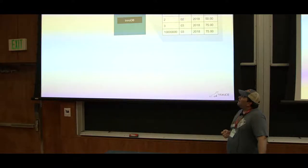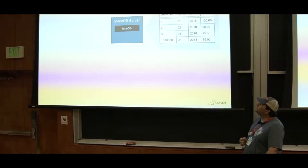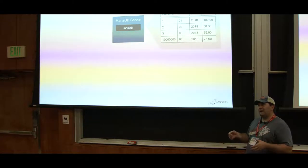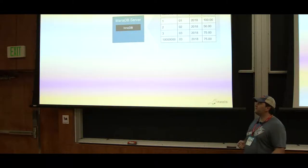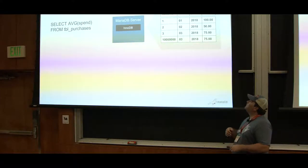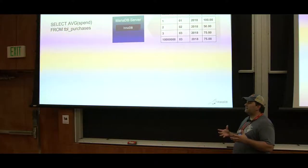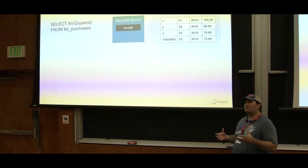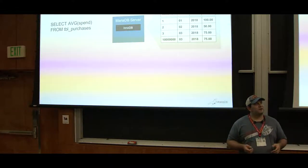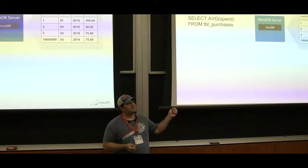InnoDB is our default storage engine. It stores data by row in its entirety — think of it as one file where every row gets appended. If you do a query like averaging spend, you end up reading all the data in that table. Every single row is read from disk. You're reading your entire dataset to do that aggregation, which is really inefficient — you only wanted to average the spend, so why are you reading customer, month, and year from disk?